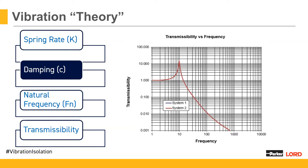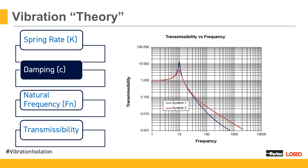Looking at this curve on the right, you can see the peak — that's our resonant frequency. What damping does is round off that peak as you increase damping, so the output to the system decreases. When we're sizing mounts for a system, we want to pay attention to where this peak is, and if we can use damping to help bring that peak down so the outputs into the system are not quite as large.